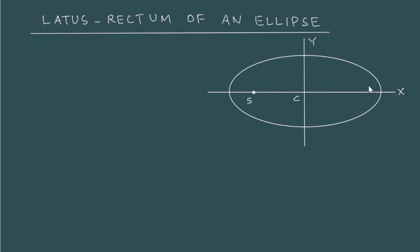So here I have shown the ellipse. The standard equation for the ellipse is x square by a square plus y square by b square is equal to 1. So we should know that a is the semi major axis and then b is the semi minor axis.